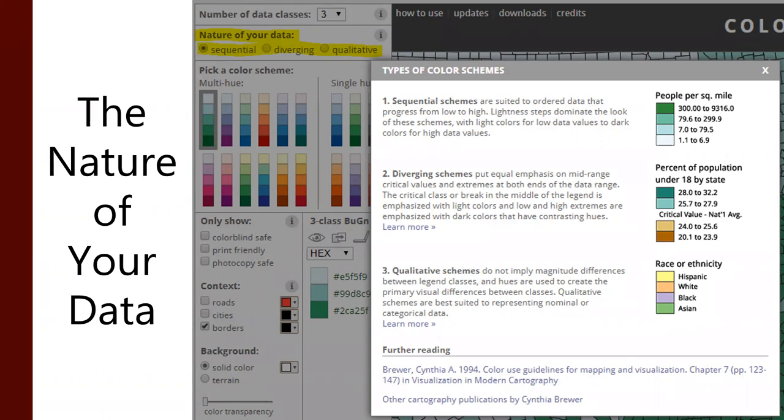Whereas sequential data are suited to order data that progress from low to high. They have a ranking, they have an order. In that case, it's people per square mile. And we go from low to high, and our colors change from low to high.